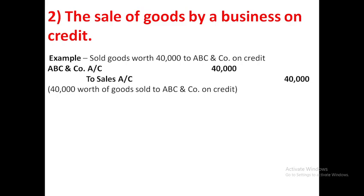Welcome to RoaPerfect classes. Today I am going to discuss the second general entry of account. This entry is related to the sale of goods by a business on credit. For example, goods worth 40,000 sold to ABC and Company on credit.